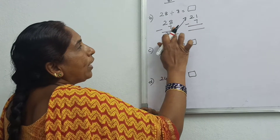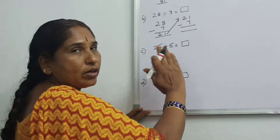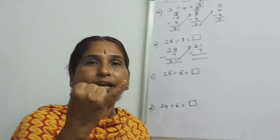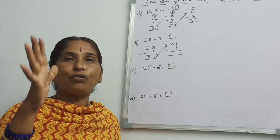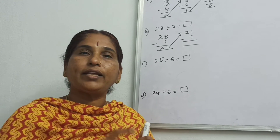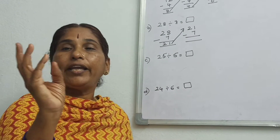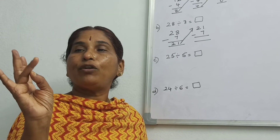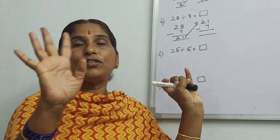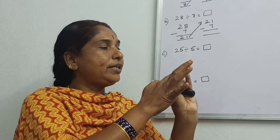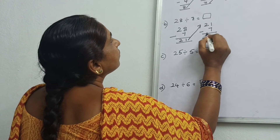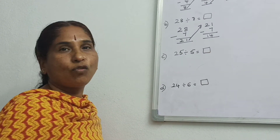You have to subtract till you get 0. Again, count 7 upward: 8, 9, 10, 11, 12, 13, 14, 15, 16, 17, 18, 19, 20, 21. That gives 14. Is it clear, children? Take this 14.